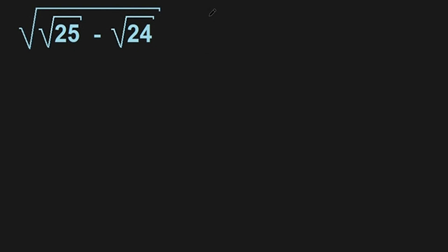Hello everyone, welcome! Here we have an interesting algebra problem. Let's simplify this: the square root of the square root of 25 minus the square root of 24. The main idea to solve this kind of question is to create a perfect square formula inside the square root.